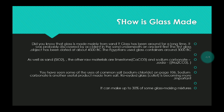How is glass made? Did you know that glass is made mainly from sand? Glass has been around for a long time — it was probably discovered by accident in the sand underneath an ancient fire. The first glass object has been dated at about 4500 B.C. The Egyptians used glass containers around 3000 B.C.